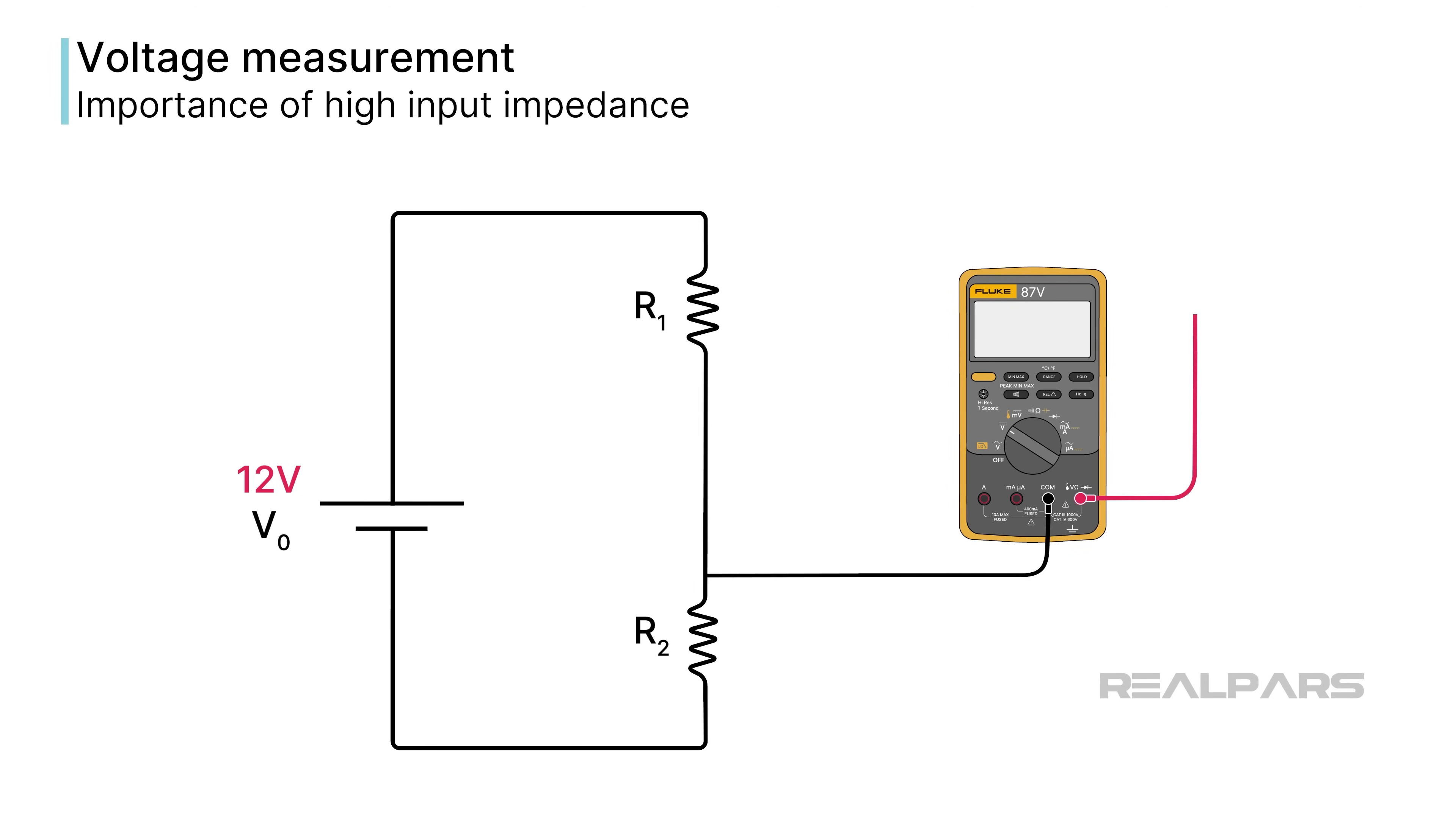Let's look at a quick illustration of why a voltmeter should have a high input impedance. We'll start with a simple series circuit, which includes a 12-volt supply and two 1,000-ohm loads. The voltage across each resistor will be 6 volts.